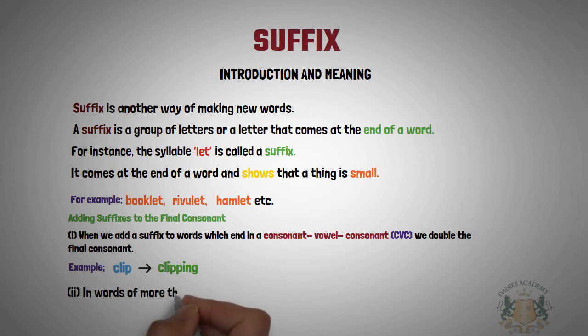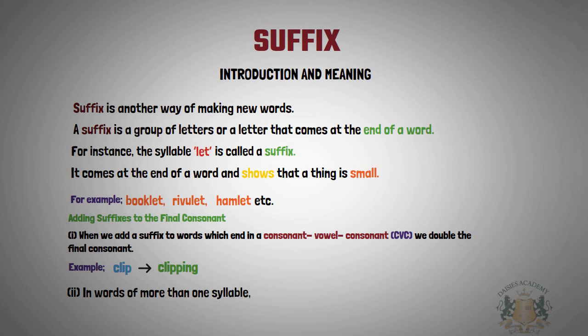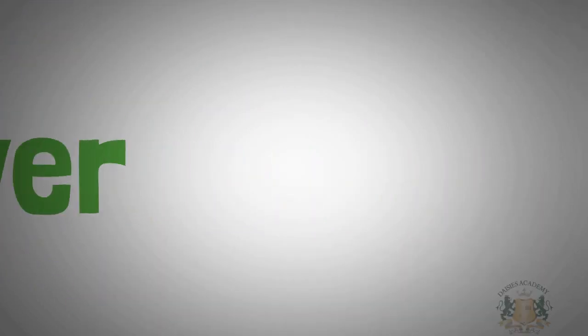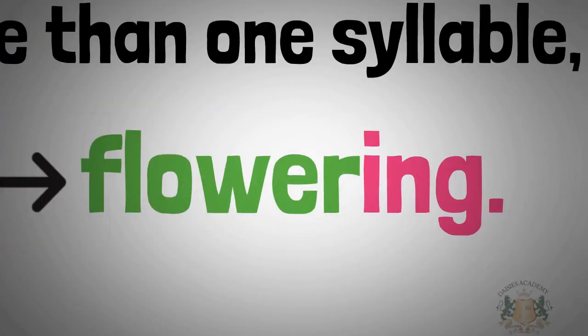Rule number two: in words of more than one syllable, when the last vowel is not stressed, the final consonant is not doubled before adding a suffix. For example, 'flower' becomes 'flowering' — you don't double the last letter in 'flower' before adding your suffix.